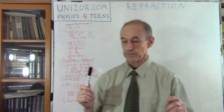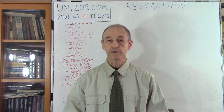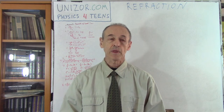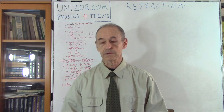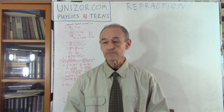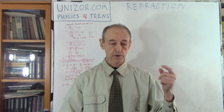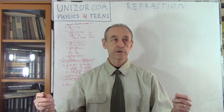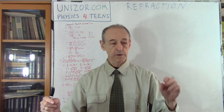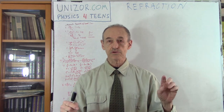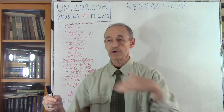So let's get to refraction. When I was talking about reflection, I mentioned something called the Principle of Least Time. This principle was introduced by Fermat — Pierre Fermat — a very talented French mathematician of the 17th century. The principle is that light travels a trajectory which assures the minimum time. If you have two points and light is supposed to go from one to another, if it's a uniform substance like vacuum, it goes along a straight line.